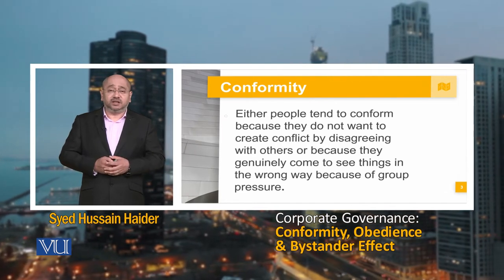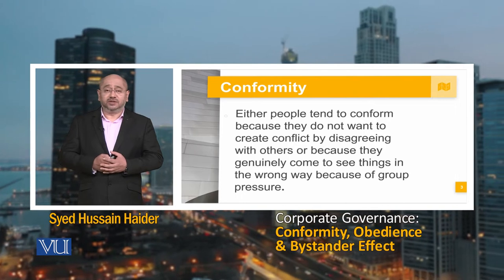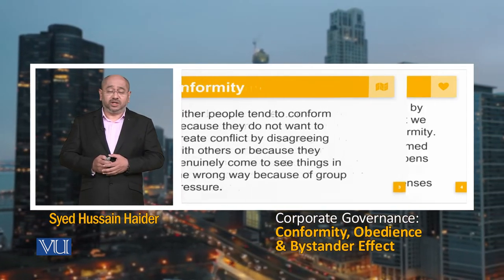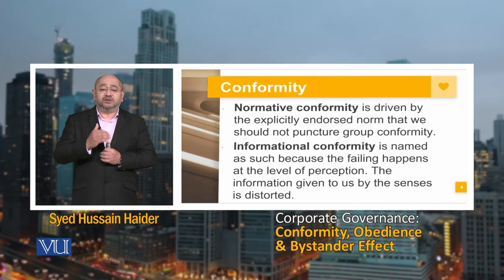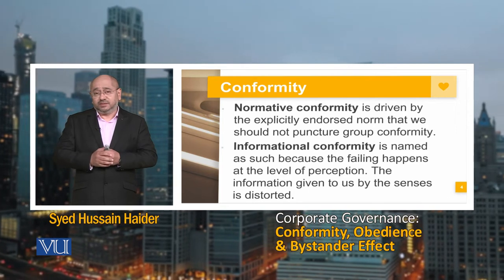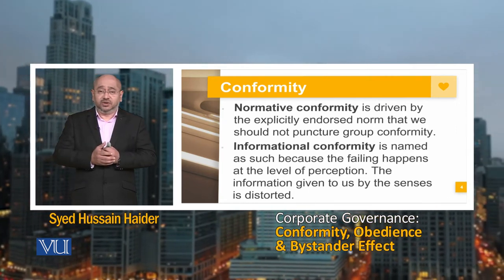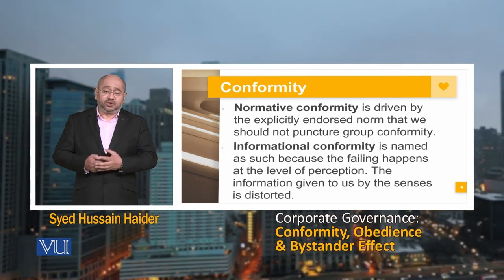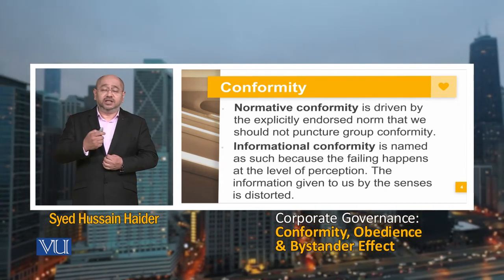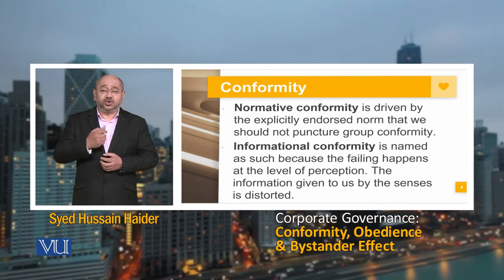Conformity can have devastating consequences, and we must see it in two subsets. The first is normative conformity — driven by the explicitly endorsed norm that we should not puncture group conformity. The second is informational conformity, where the failing happens at the level of perception — the information given to us by the senses is distorted, so we are perceiving in the wrong way, looking at the real picture through a different lens. Both types of conformity can lead to the debilitation of the individual, the institution, the society, and the nation.